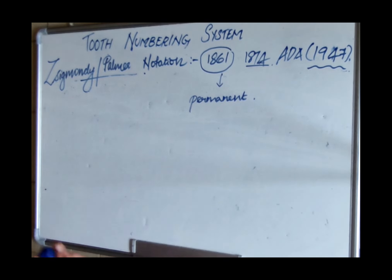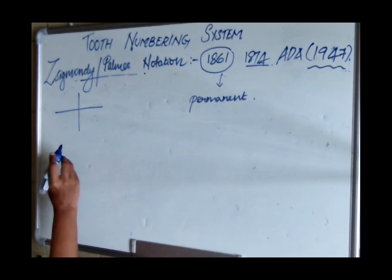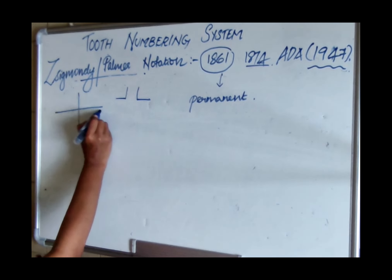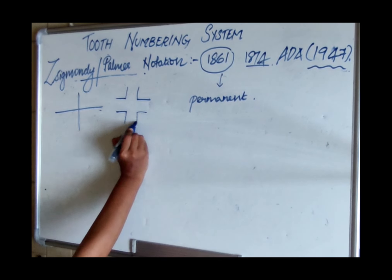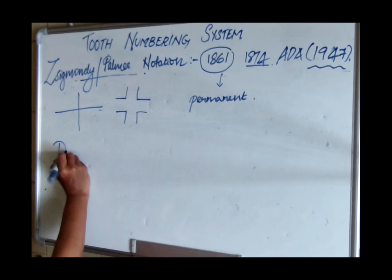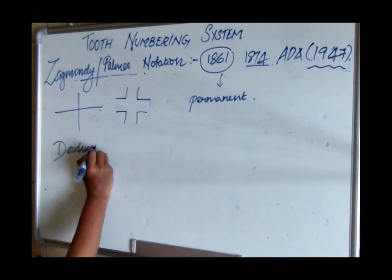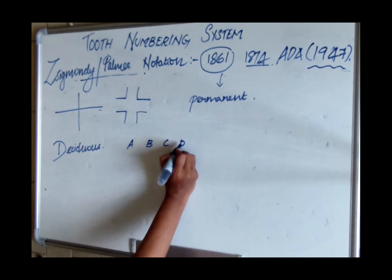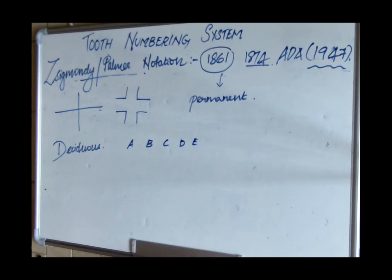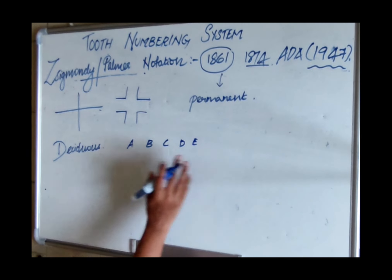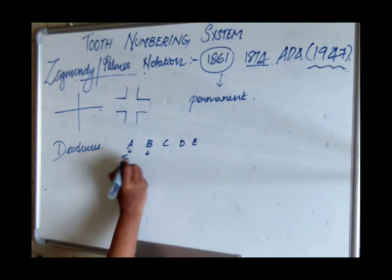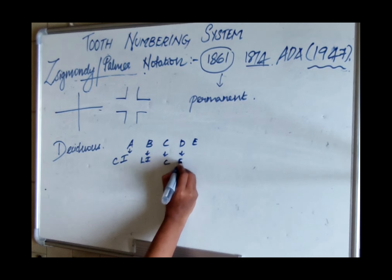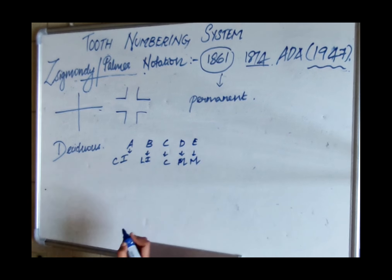In the Sigmondi/Palmer system, four quadrant symbols are used: one symbol for maxillary right, one for maxillary left, one for mandibular right, and one for mandibular left. For the deciduous dentition, letters A through E are used: A for central incisor, B for lateral incisor, C for canine, D for first molar, and E for second molar.